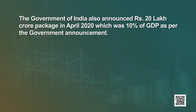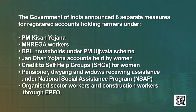The Government of India also announced a Rs. 20 lakh crore package in April 2020, which was 10% of GDP. The government announced 8 separate measures directed at farmers registered under PM Kisan Yojana, MNREGA workers, BPL households under PM Ujjwala scheme, Jan Dhan account holders held by women, credit to self-help groups for women, pensioners, Divyang and widows receiving assistance under the National Social Assistance Programme, organised sector workers through EPFO, and construction workers.